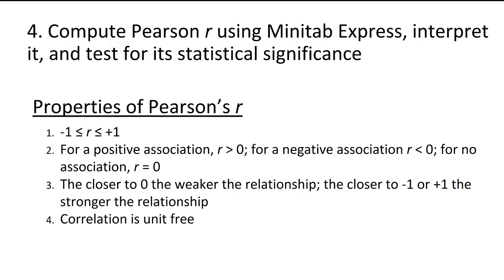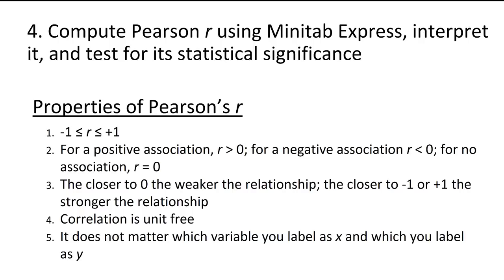Fourth, correlation is unit free. This means that two variables do not need to be on the same scale and that two correlations can be compared even if the variables are on different scales. For example, we can compute the correlation between height in inches and weight in pounds and compare that to a study examining height in centimeters and weight in grams. Fifth, it does not matter which variable you label as X and which as Y — the correlation between X and Y is the same as the correlation between Y and X.